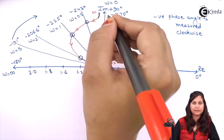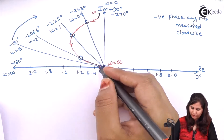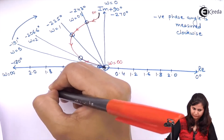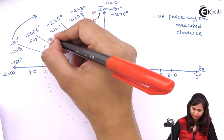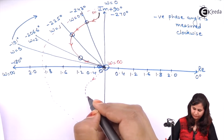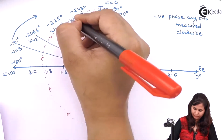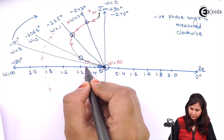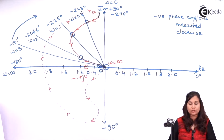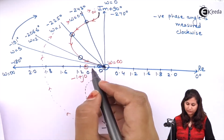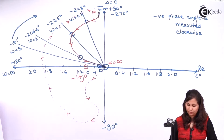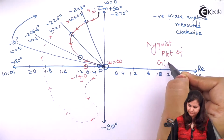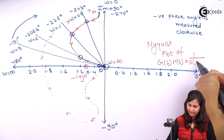Now draw the mirror image of this polar plot so that we will obtain the Nyquist plot of the system. This is the mirror image of the polar plot. The Nyquist plot of G(s)H(s) = 1/(s(s−1)) is now complete, and here we have the critical point −1 + j0.